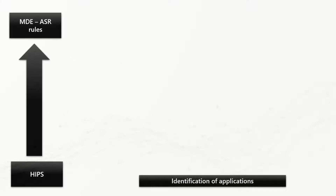The first step is to identify the applications your users are using. Depending upon the behavior of applications running on the endpoint, attack surface reduction rules will be triggered. If you already know all the applications running in your environment — how they behave, what files they access — you are in a great position to get started, as you have already completed the initial awareness phase.